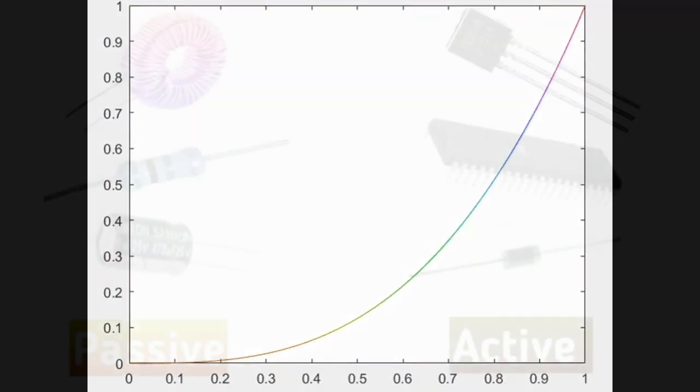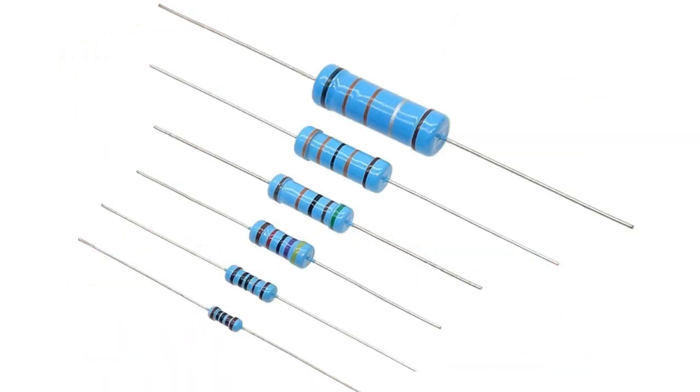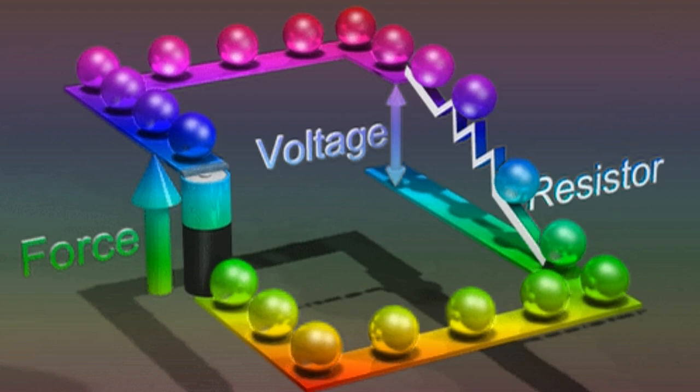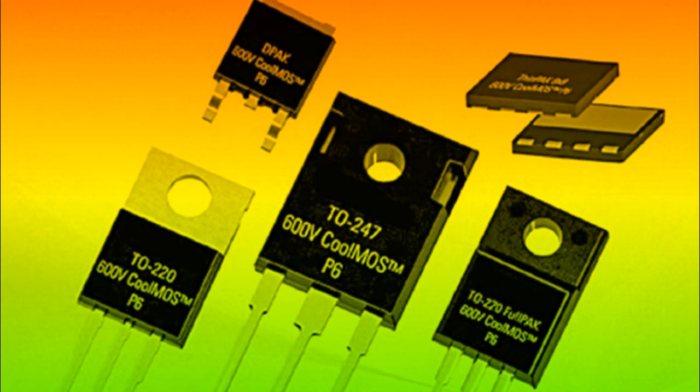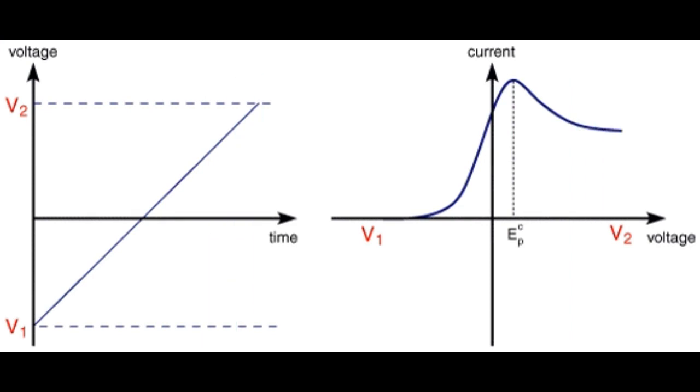Three: Linearity. Passive components are linear and active components are non-linear. Meaning in a passive component like a resistor, the voltage drop across will be linear to its resistance value according to Ohm's law. While in a transistor or other active components, the output will have an amplification factor that will not be linear.